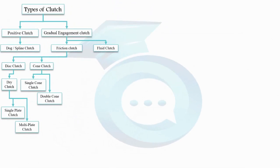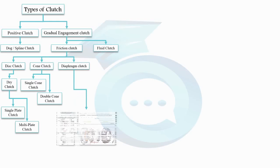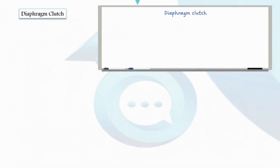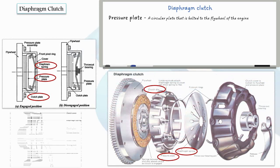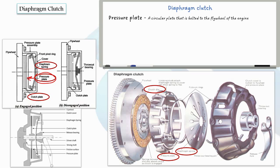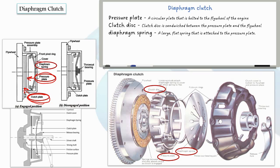Next, we have the diaphragm clutch. The diaphragm clutch consists of a pressure plate, a clutch disc, and a diaphragm spring. The pressure plate is a circular plate that is bolted to the flywheel of the engine, whereas the clutch disc is sandwiched between the pressure plate and the flywheel. The diaphragm spring is a large flat spring that is attached to the pressure plate. This design offers several advantages, including high clamping force with minimal spring travel, smooth engagement and disengagement, and self-adjusting capabilities.